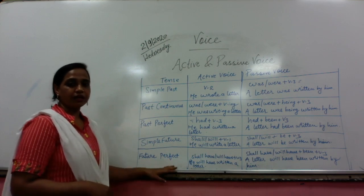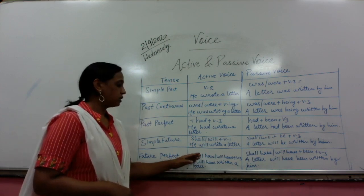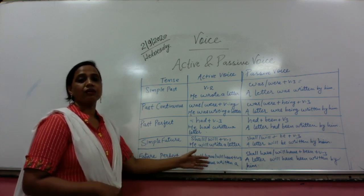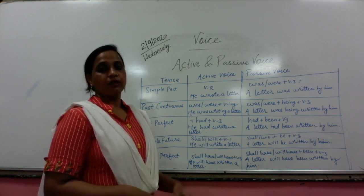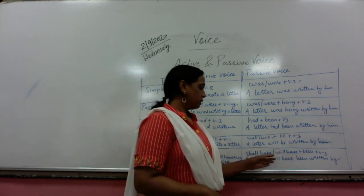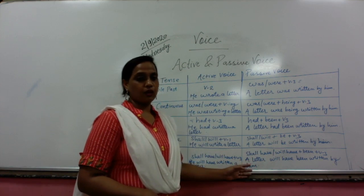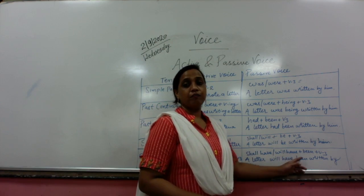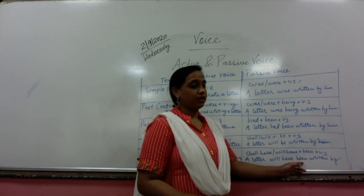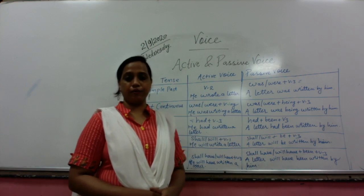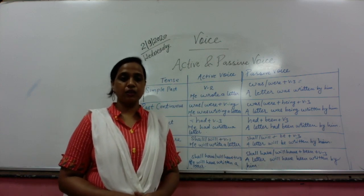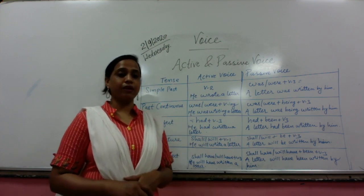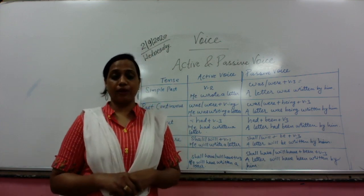For future perfect tense, in active voice the structure is shall have/will have + past participle: 'He will have written a letter.' In passive voice, take the object ahead — 'A letter will have been written by him.' These are all the structures to remember while changing sentences into passive voice.